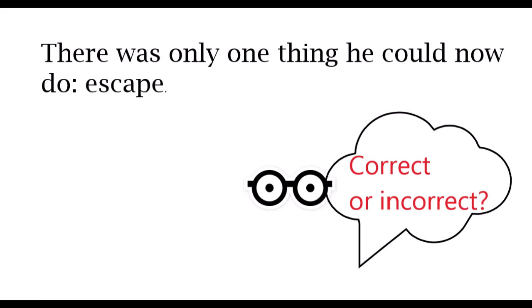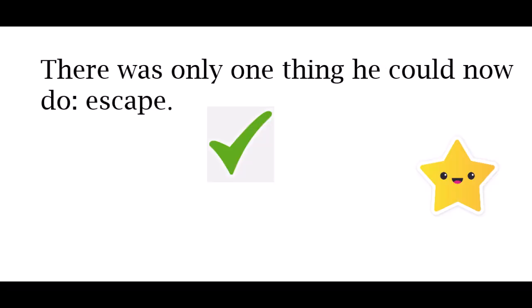Looking at the first part — 'there was only one thing he could now do' — that is a sentence in its own right. It's an independent clause; it can stand on its own. 'Escape,' which comes after it, does that relate to the one thing he could now do? Yes. So that sentence works — they've used a colon correctly.